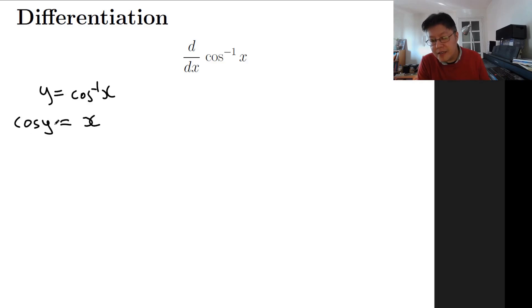On the left, if we differentiate cos y with respect to x, we get negative sine y times dy/dx equals 1. And x becomes a 1. Now we can make dy/dx a subject.